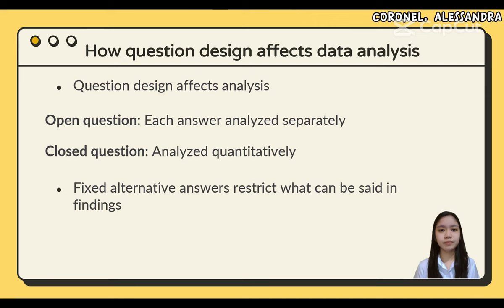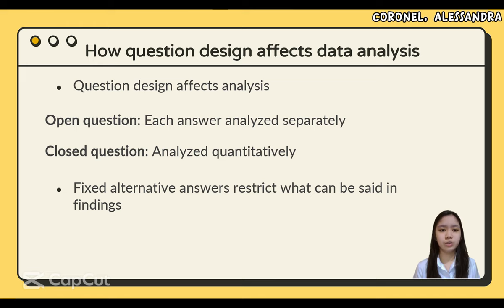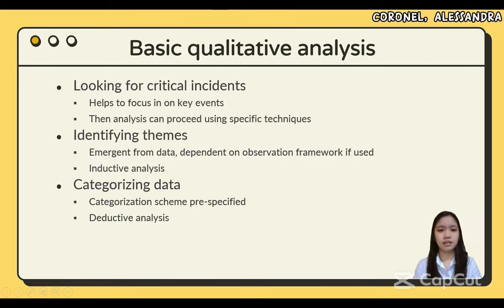Fixed alternative answers restrict what can be said in the findings. Well-designed close-ended questions are easy to understand and can be answered quickly. However, you might still miss important answers that are relevant to respondents. An incomplete set of response items may force some respondents to pick the closest alternative to their true answer, and this type of question may miss out on valuable detail. Fixed alternative answers limit your responses, while open-ended questions enable a broad range of answers.